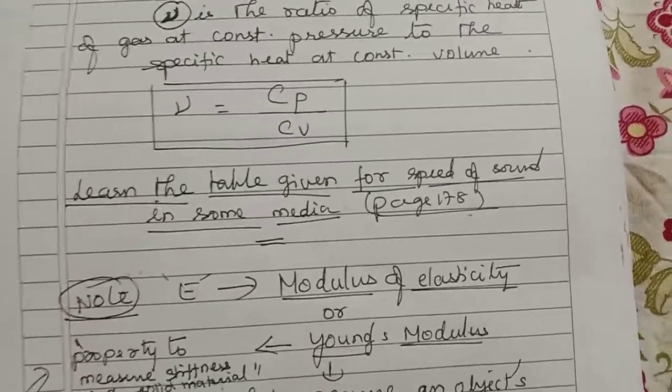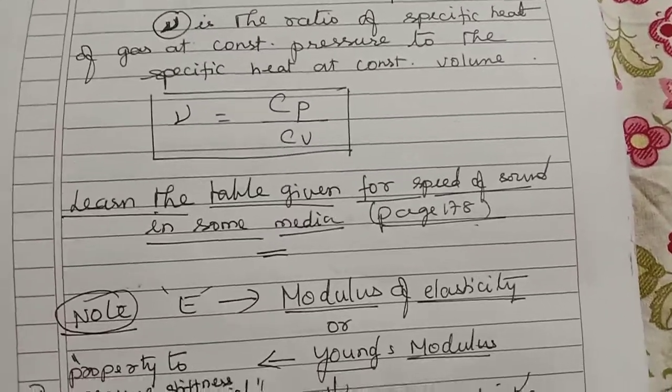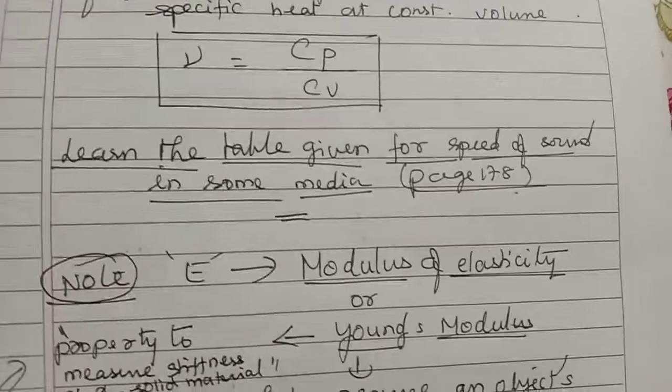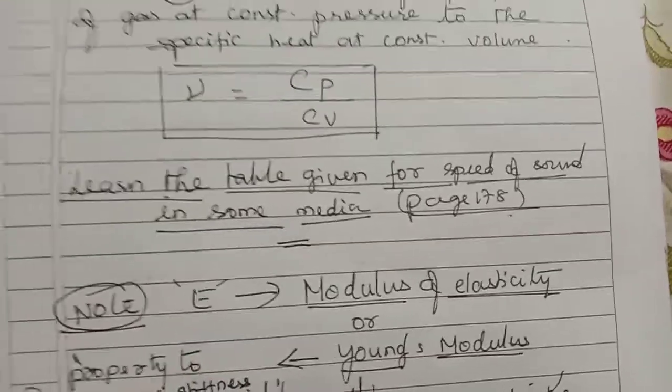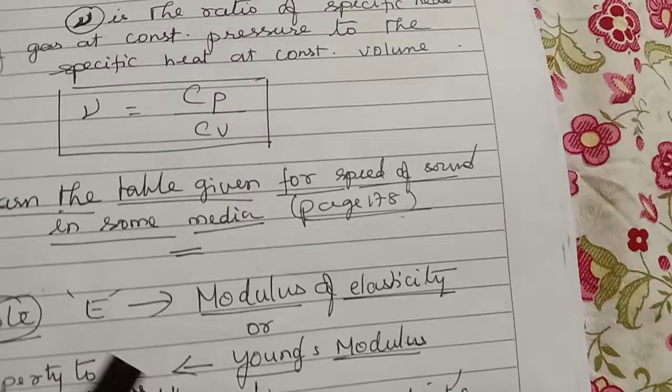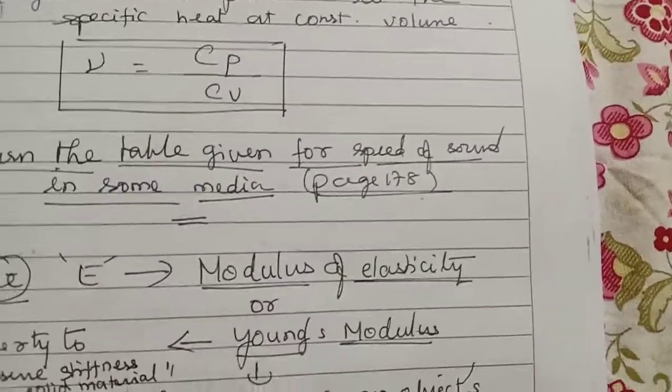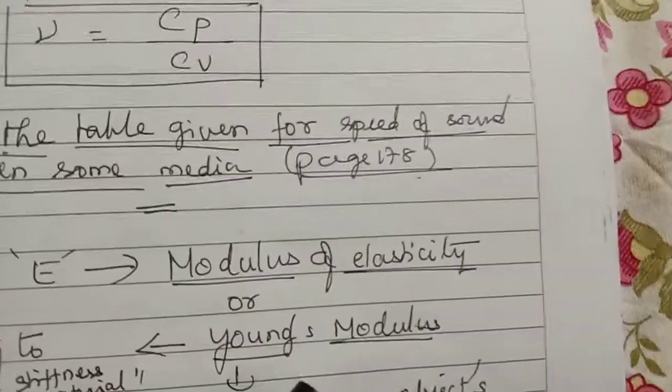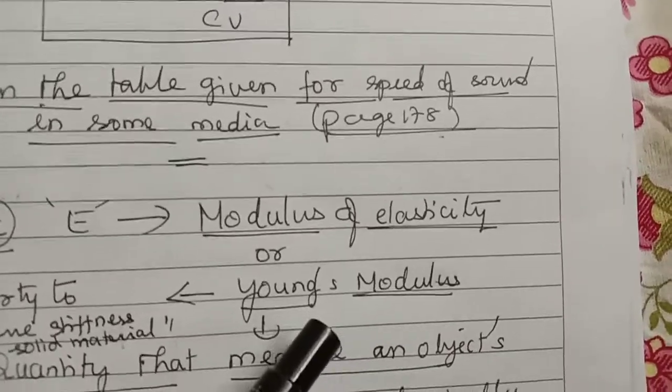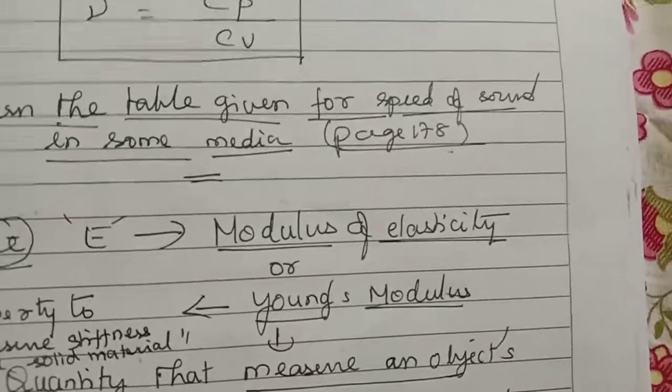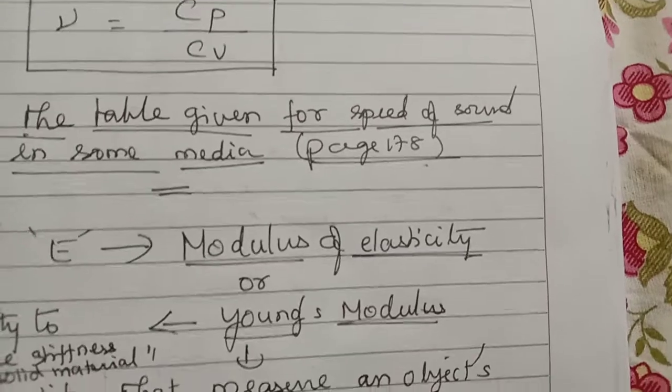So let us have a note. We are going to discuss in small understanding about this E. What is that E called? The E is called the modulus of elasticity or it is also called Young's modulus. So what is the meaning of Young's modulus? Some students may have this question in their mind. Because it is not given clearly in your textbook, you will have a question.